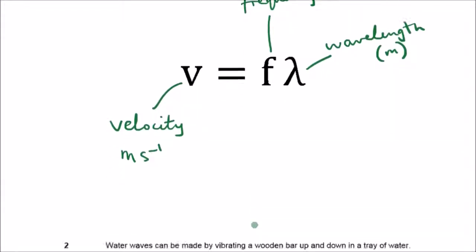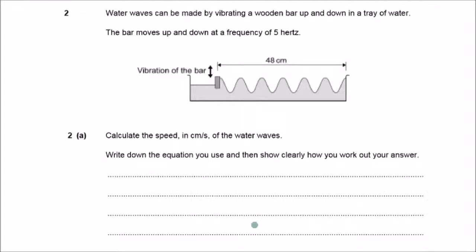So, here's a question that we can use to test our understanding here. Water waves can be made by vibrating a wooden bar up and down in a tray of water. The bar moves up and down at a frequency of 5 hertz. So, it's telling us the frequency. What else does the question tell us? Well, it tells us that this distance here is 48 centimeters. Okay, that will come in useful. So, let's look at what they're asking. Calculate the speed in centimeters per second of the water waves. Write down the equation you use and then show clearly how you work out your answer.